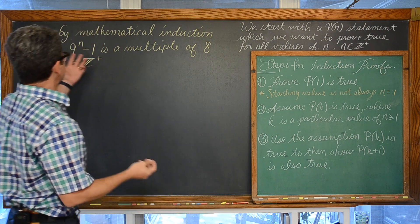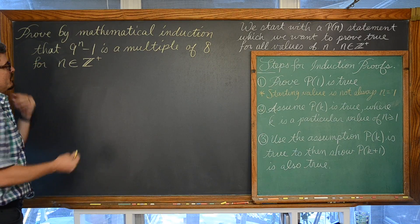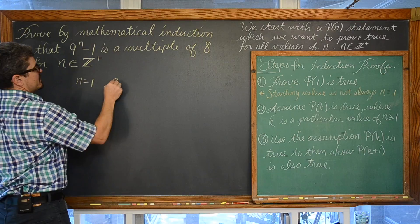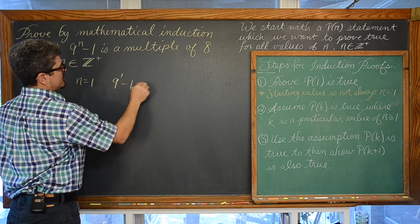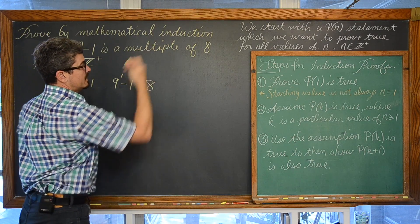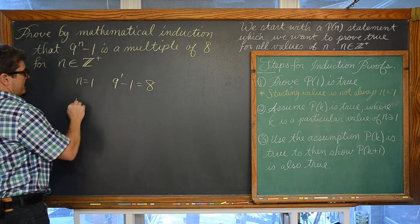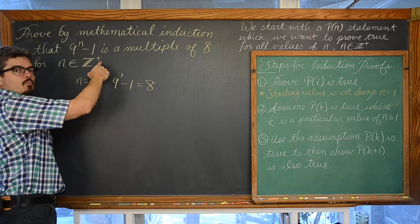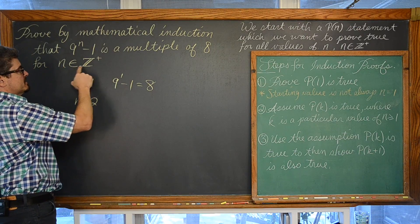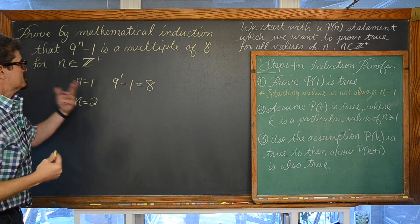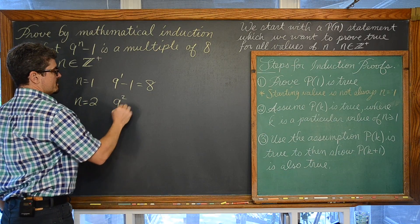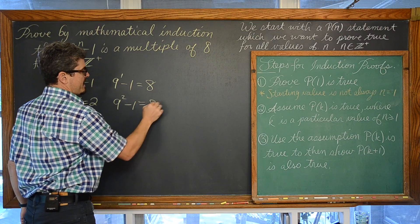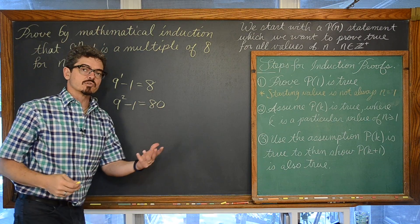Does this even work? Well, will it work if n is equal to 1? We have 9 to the first power minus 1, which is equal to 8. And 8 is certainly a multiple of 8. For n equal to 2, we have 9 squared is 81, and 81 minus 1 is equal to 80. Well, that is 8 times 10, so that is a multiple of 8.